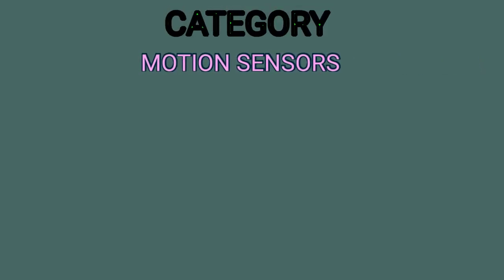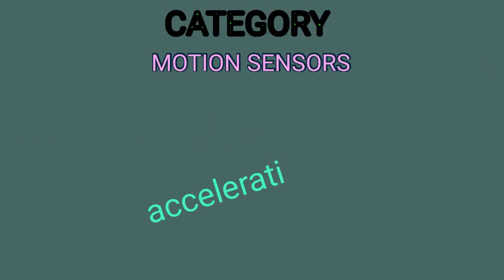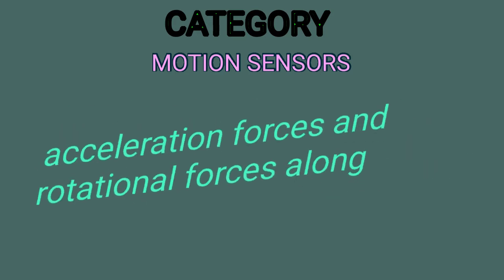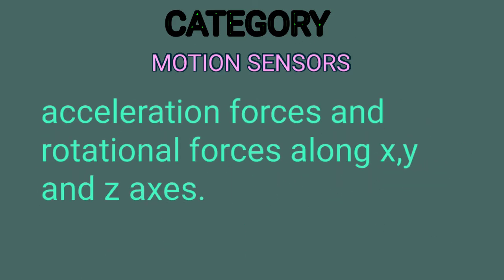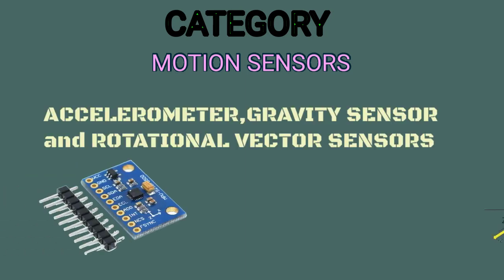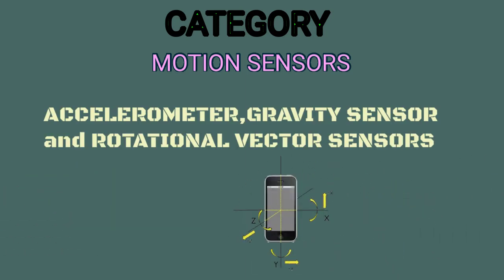Motion Sensors — these sensors deal with acceleration forces and rotational forces along X, Y and Z axes. This category includes accelerometers, gravity sensors, gyroscopes, and rotational vector sensors.